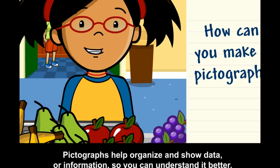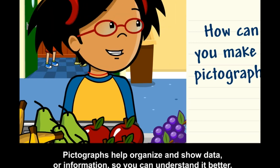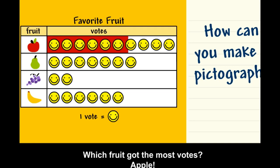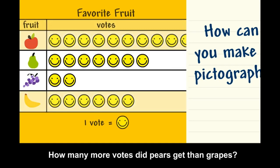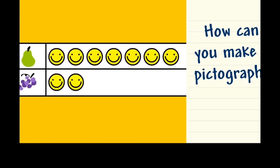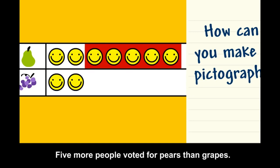Picture graphs help organize and show data or information so you can understand it better. Which fruit got the most votes? Apple. How many more votes did pears get than grapes? Five more people voted for pears than grapes.